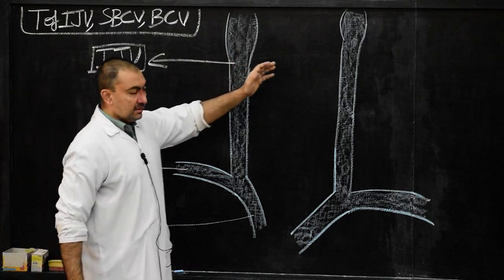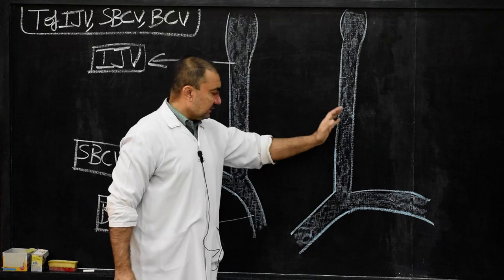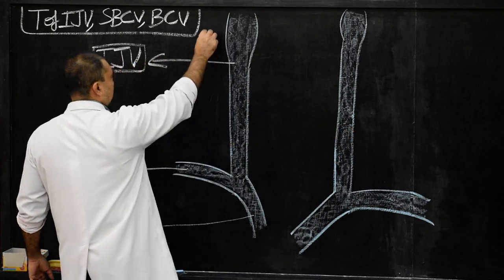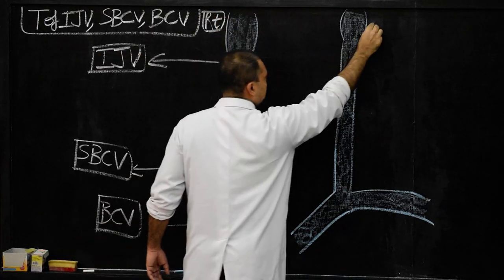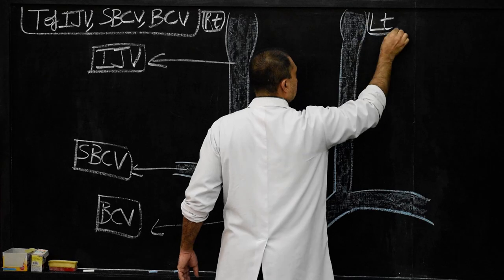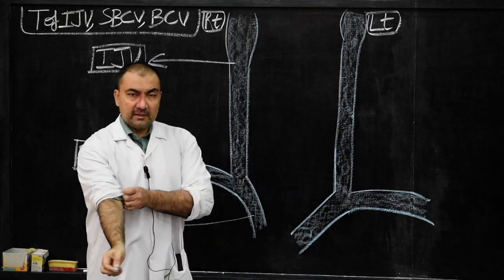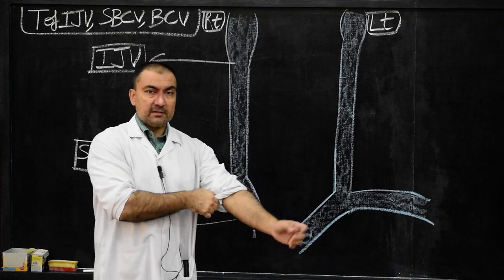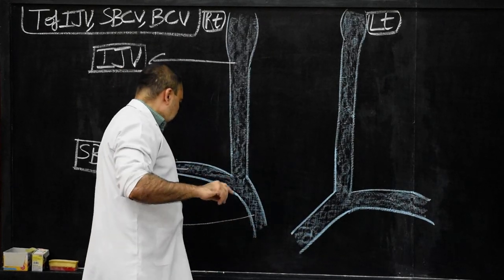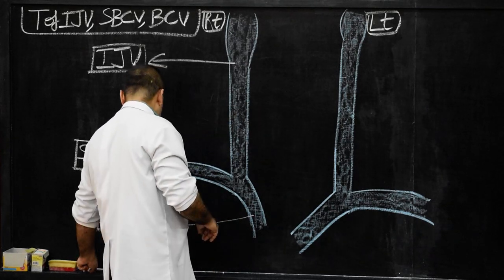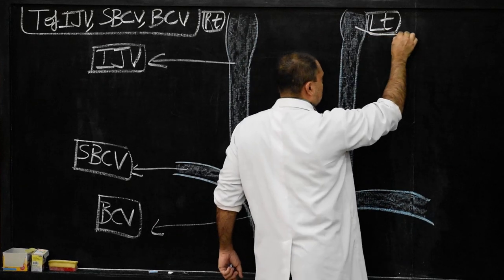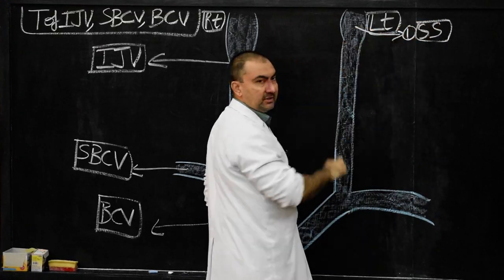Please note down: this is the left side and this is the right side. We name this as right side and this as left side. Now we start with the tributaries. The first tributary is sigmoid sinus.